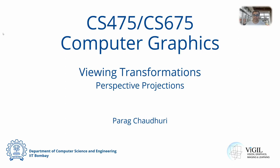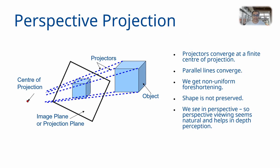We continue our discussion of viewing transformations with perspective projections. We have seen various parallel projections so far — orthographic, axonometric, and oblique — and today we move on to perspective projections. In parallel projection the projectors were parallel to each other. With oblique projections we relaxed that constraint, and now we have projectors converging at a point known as the center of projection, or camera center, which is at a finite distance from our world.